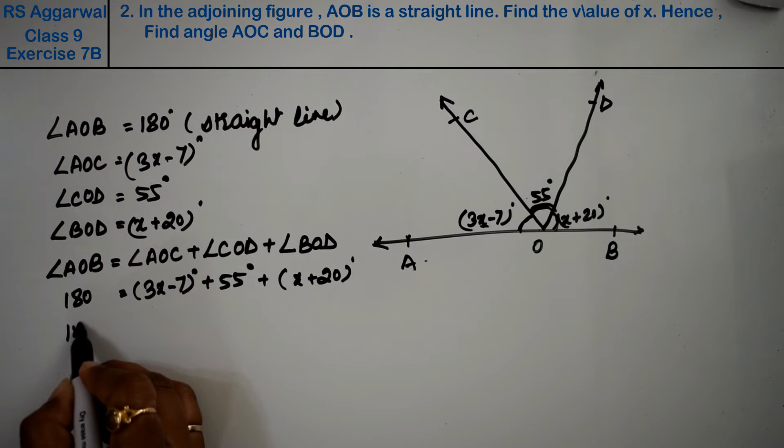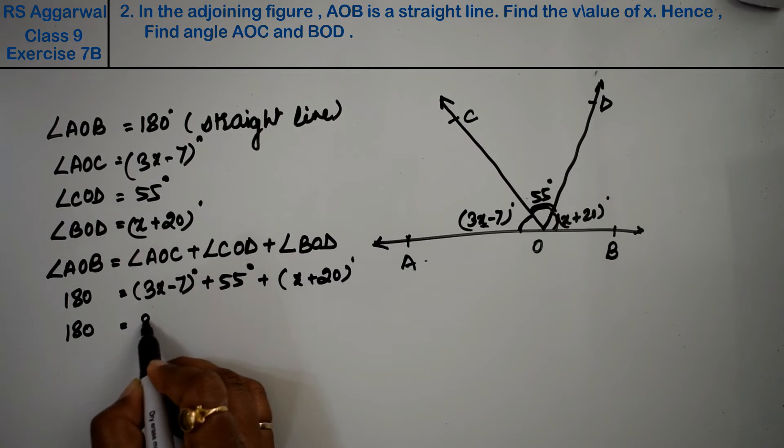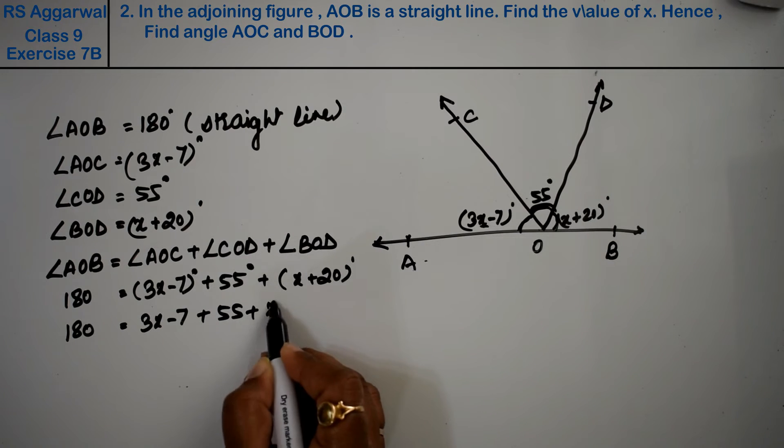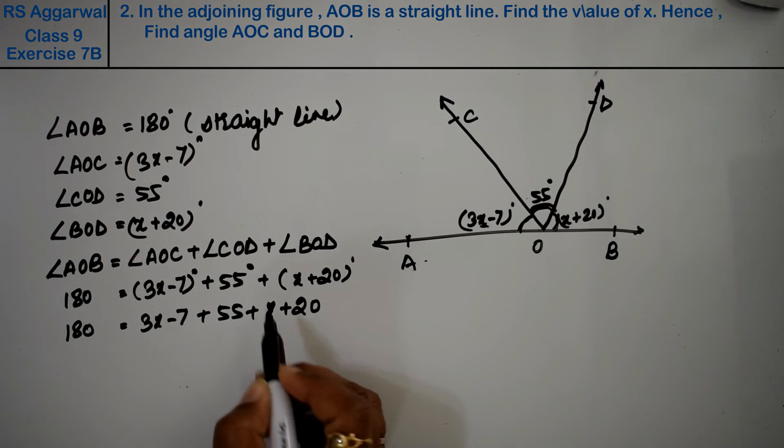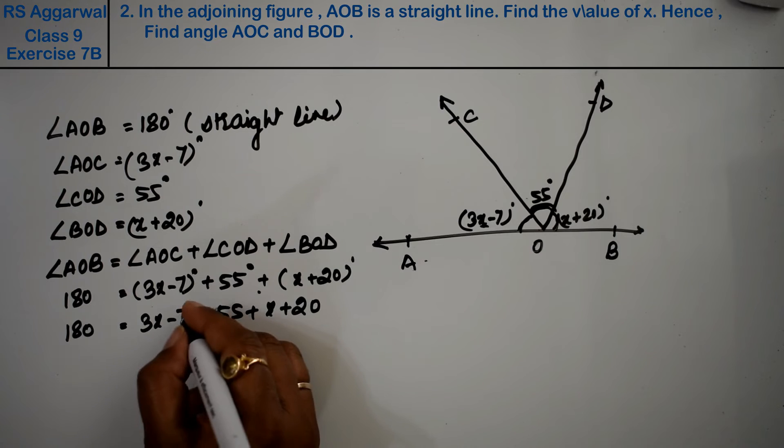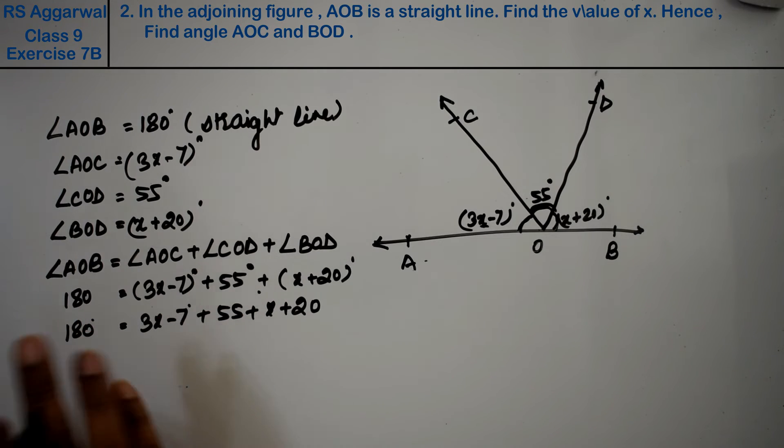Now opening the brackets: 3x minus 7 plus 55 plus x plus 20. Plus was outside, so no sign change. I'll add the degree later.